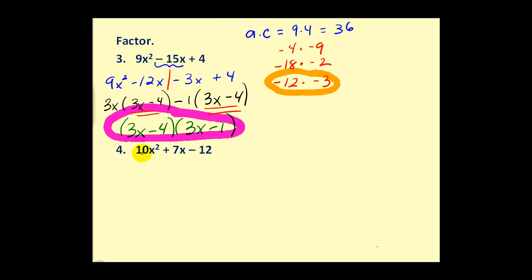First we notice that 10 is not a common factor. So we multiply a times c. A times c would be 10 times -12, which would equal -120. We want to find the factors of -120 that add to 7.